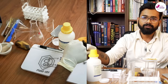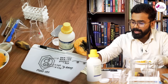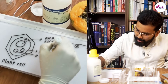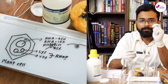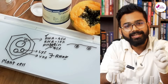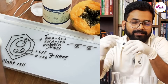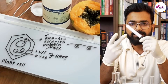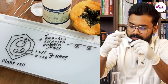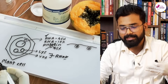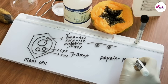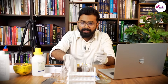I have taken papaya extract. The main purpose of this extract is to remove protein — papaya contains something called papain, which acts as a protease and digests protein. Remember, to get DNA you digest everything else — cell wall, cell membrane, lipids, proteins — but keep the DNA intact. That is our prime approach.